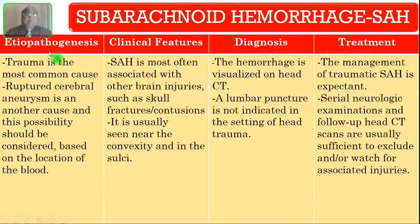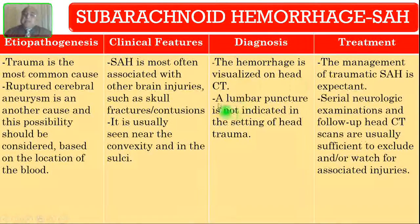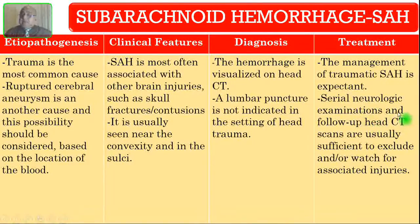The next problem is subarachnoid hemorrhage or SAH. Trauma is the most common cause; however, ruptured cerebral aneurysm is another cause and should always be considered based on the location of blood. SAH is most often associated with other brain injuries such as skull fractures or brain contusion, and is usually seen near the convexity and in the sulci. The hemorrhage is visualized on head CT. Lumbar puncture is not indicated in the setting of head trauma. Management of traumatic SAH is expectant: serial neurological examination and follow-up head CT scans are usually sufficient.